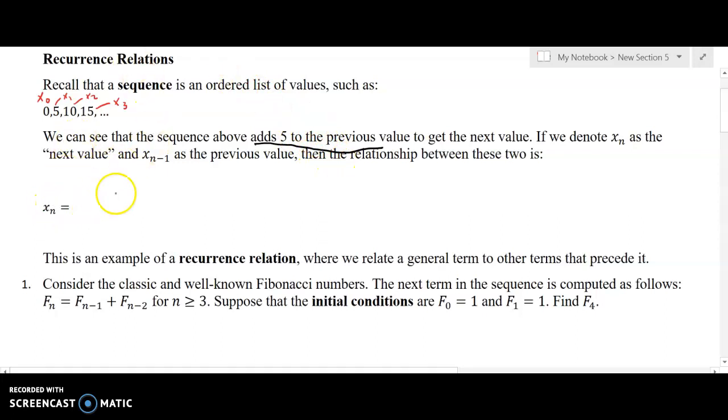To actually write this sequence as a function of the previous value, so we'll often see something like xn minus 1. n minus 1 just refers to the previous value. So we can read this right here as, to get the next value, what do I have to do to the previous value? For this sequence up here, we observed in words that we have to take the previous value and add 5 to it to get the next value.